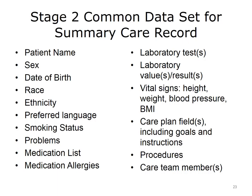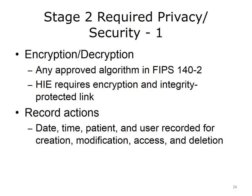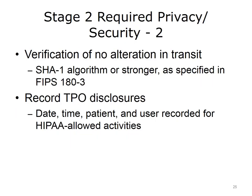Stage 2 also specified a common data set for the summary care record — the minimum amount of information that could be included in a patient's transmitted summary care record. Stage 2 also introduced privacy and security measures, including specifications around algorithms for encryption and decryption, with any information transmitted through the HIE needing to be encrypted and the sender and receiver needing to be integrity protected. All accesses and modifications needed to have certain information collected, such as date, time, patient, and user, and various algorithms had to verify that information was not altered in transit. Additionally, all disclosures, including treatment, payment, and operations, or TPO disclosures, needed to be recorded.